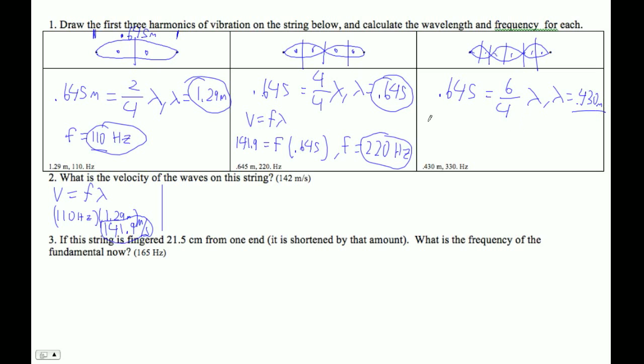And then now we can use V equals F lambda. So 141.9, if we didn't already know that it was 330, we can say 141.9 equals frequency times 0.43, and then divide 141.9 divided by 0.43 and you get 330 hertz. The wave speed here, you can also figure out the wave speed. It should be 220 times 0.645. This is a way to check to see if we did the math. 220 times 0.645 is indeed 141.9.